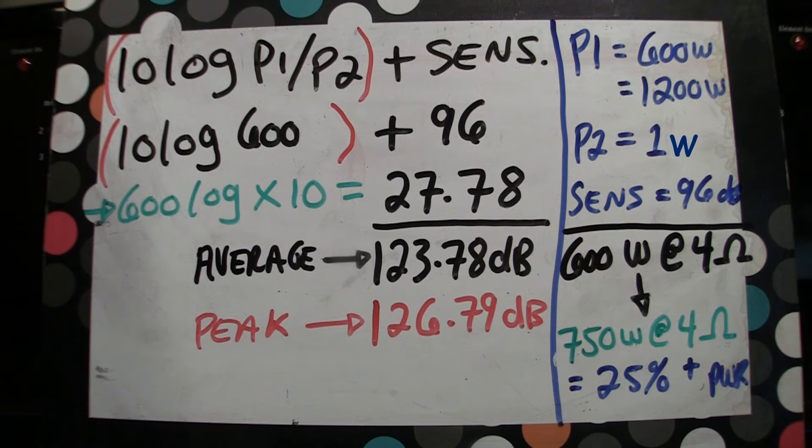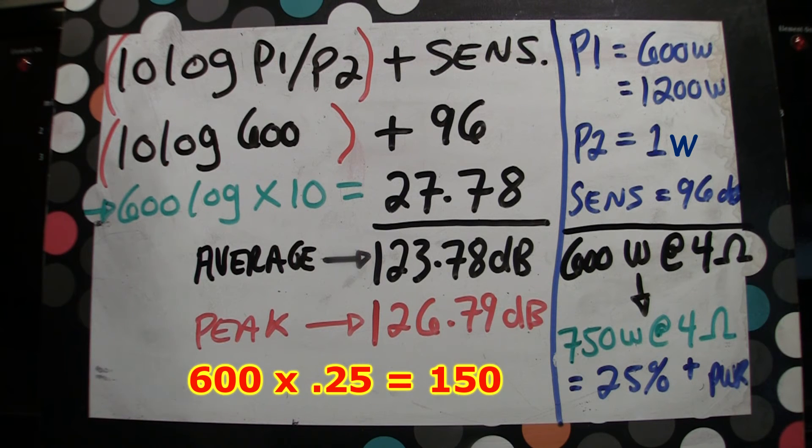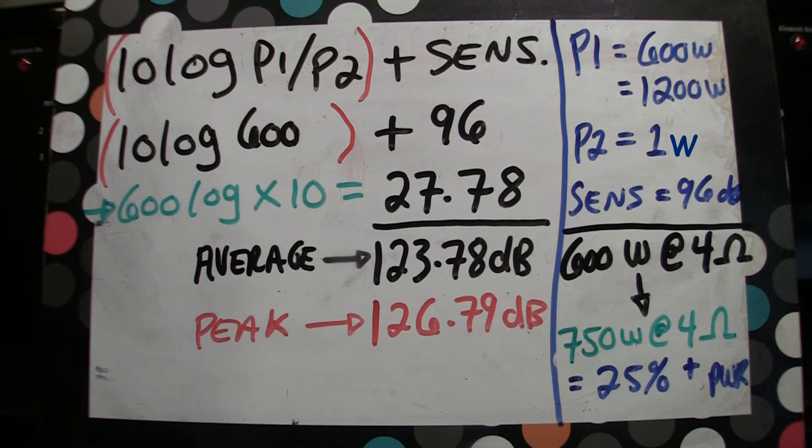600 times 25% is 150, so 600 plus 150 equals 750 watts per channel. So that's a pretty good match of a speaker to an amplifier, and that's a pretty good rule of thumb.